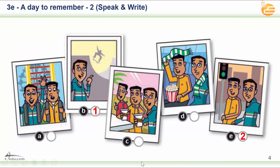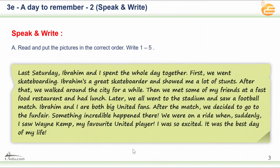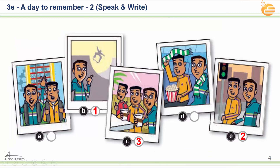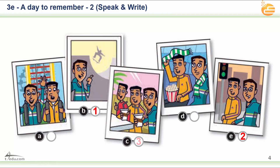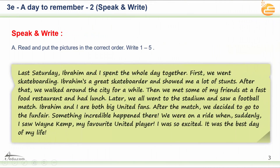Number three — which one is number three? Excellent, C is number three. Number four: D is number four, because we have the sentence 'We all went to the stadium and saw a football match.' And the last one, number five, is A. After the match, they decided to go to the fun fair. So A is number five.